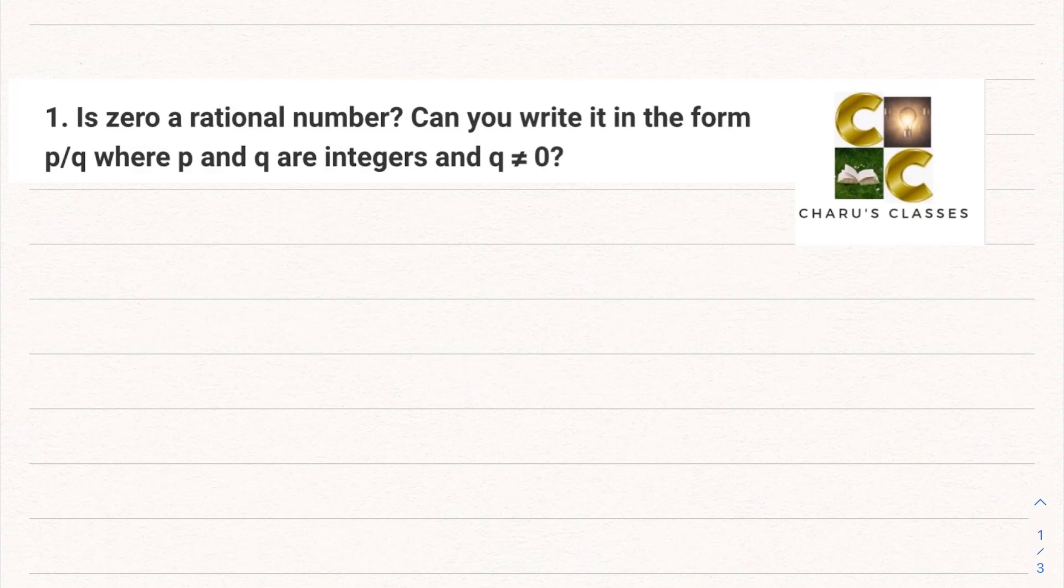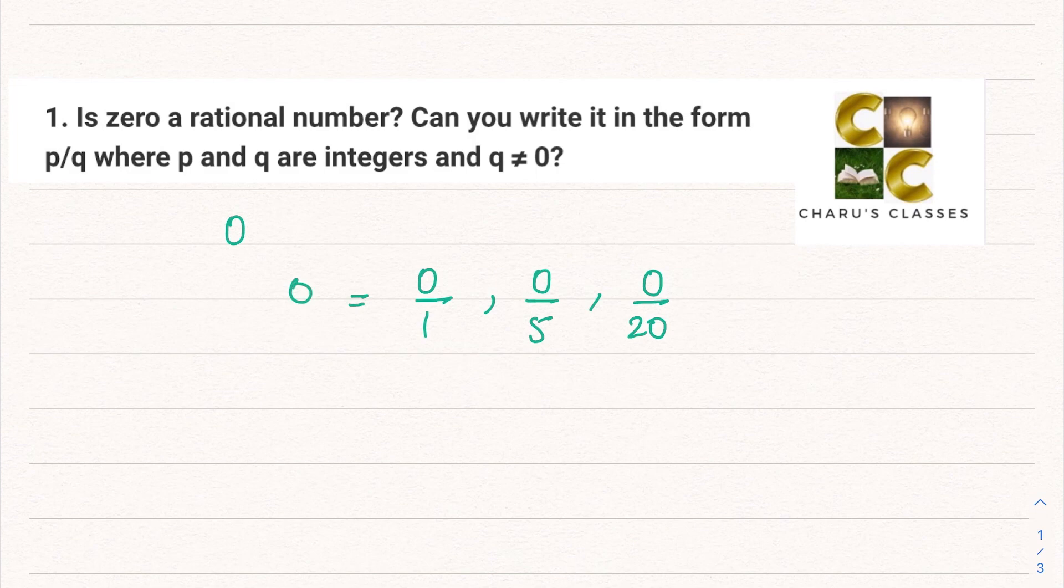So let's consider this number 0. If I write 0 as 0 by 1, its value is 0. If I write it as 0 by 5 or 0 by 20, all of these have value 0. So yes, I can write 0 in the form of p by q, and therefore it is a rational number.